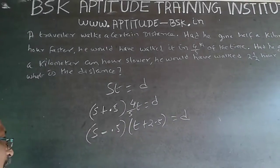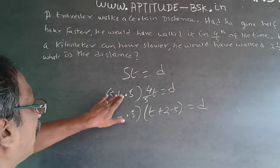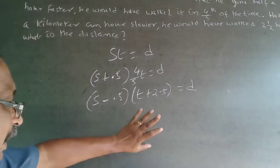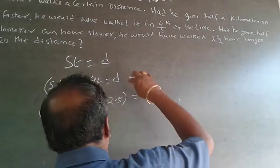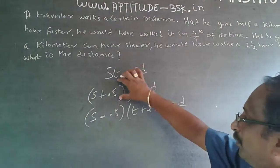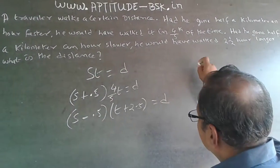And the easier way, whenever you make some mistake, remember when the speed is going up, time comes down. When the speed comes down, time goes up. Now, because the right hand side is equal, left hand side will be equal.